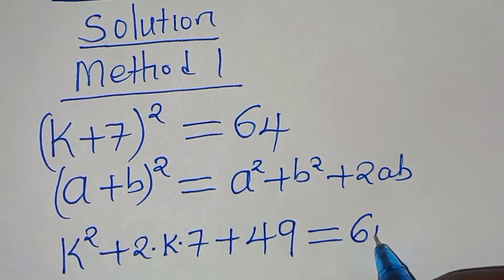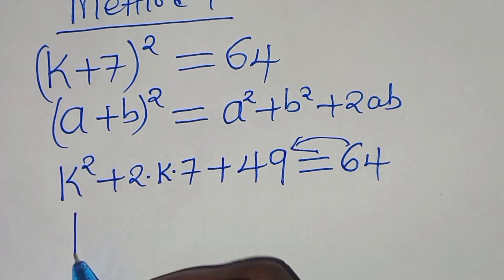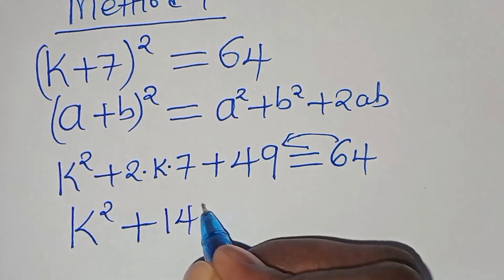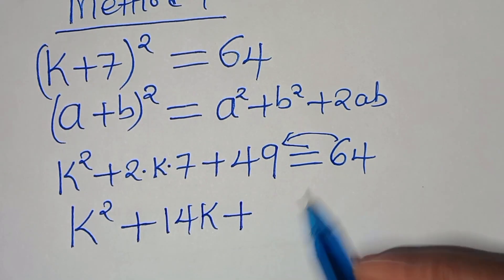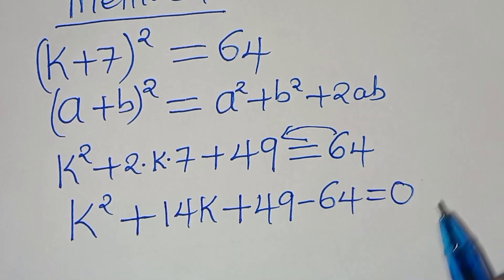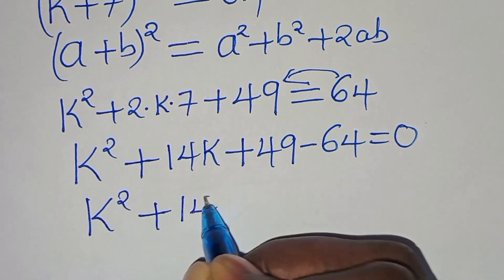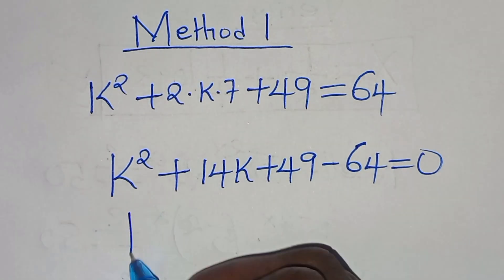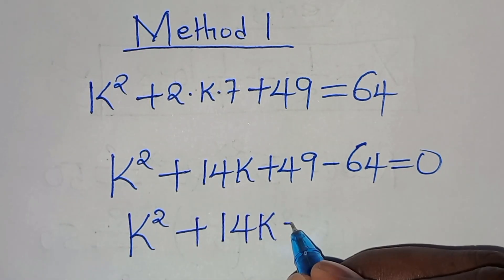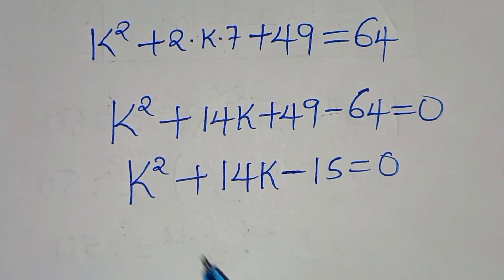This gives us k² + 14k + 49 = 64. Taking 64 to the left-hand side, we get k² + 14k + 49 - 64 = 0, which simplifies to k² + 14k - 15 = 0.